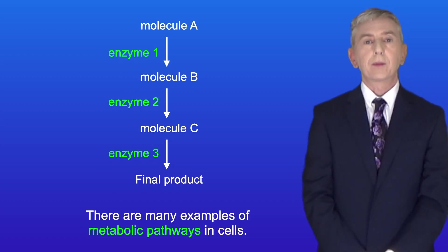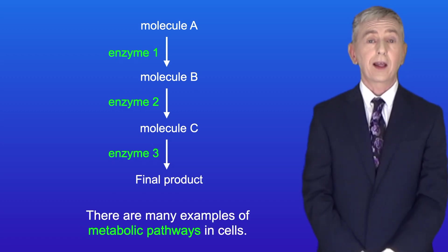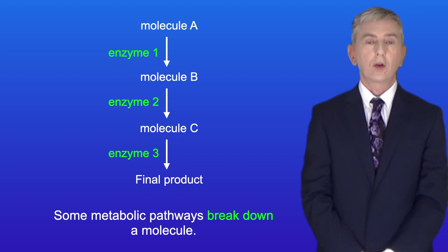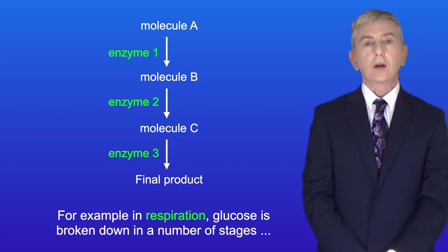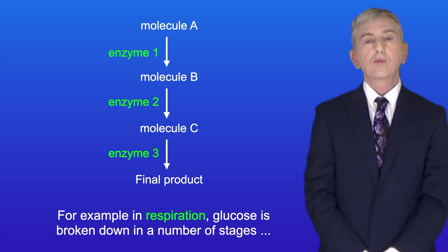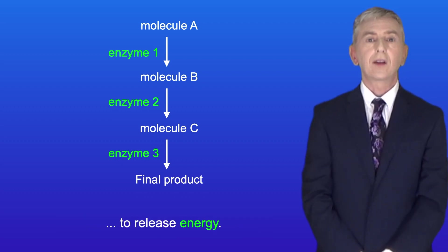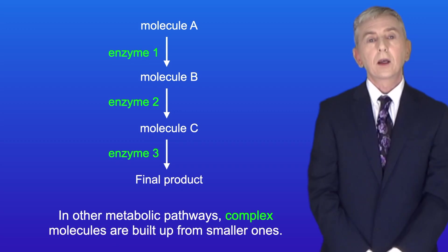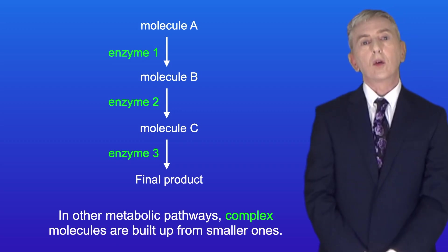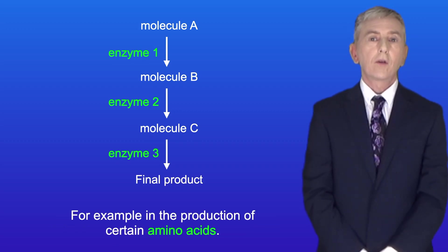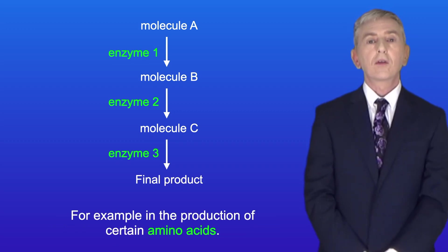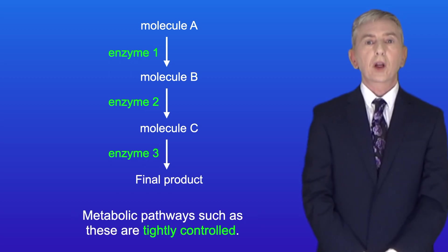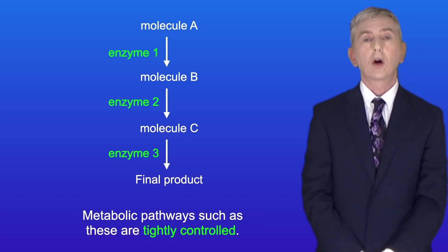There are many examples of metabolic pathways in cells. Some metabolic pathways break down a molecule — for example, in respiration, glucose is broken down in a number of stages to release energy. In other metabolic pathways, complex molecules are built up from smaller ones — for example, in the production of certain amino acids.